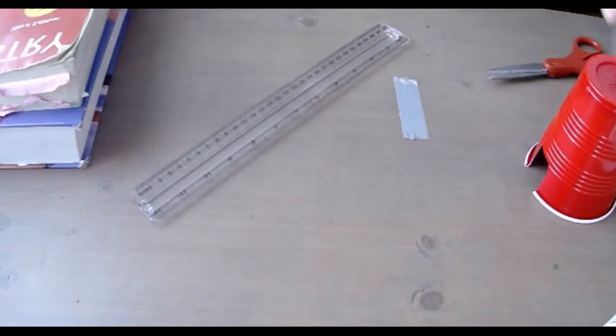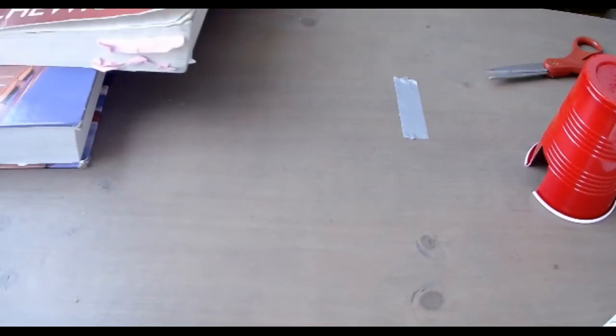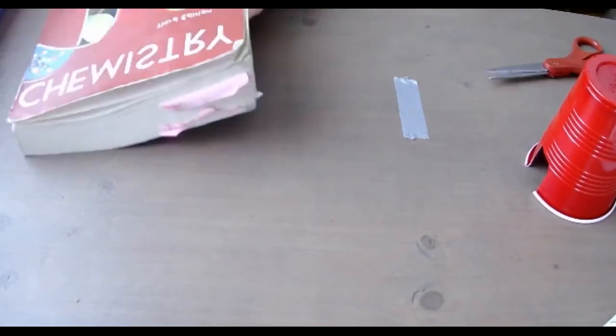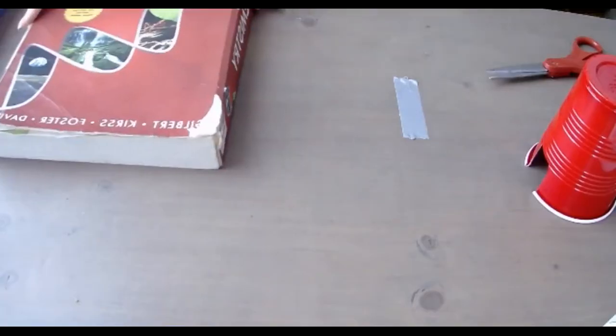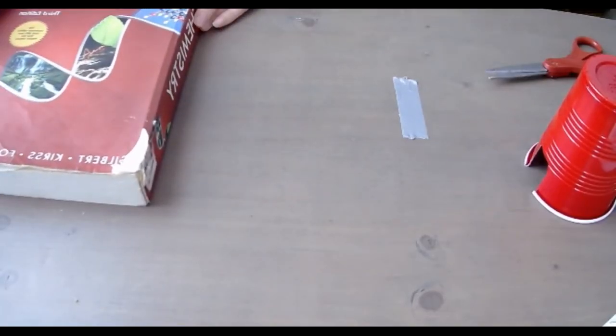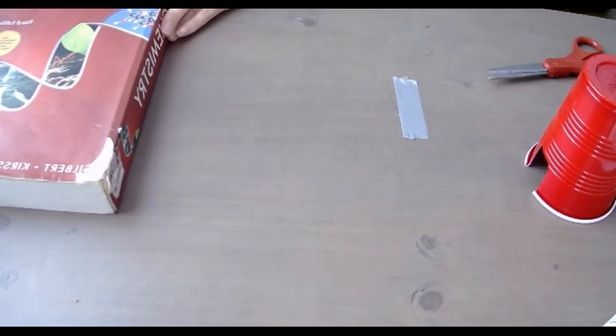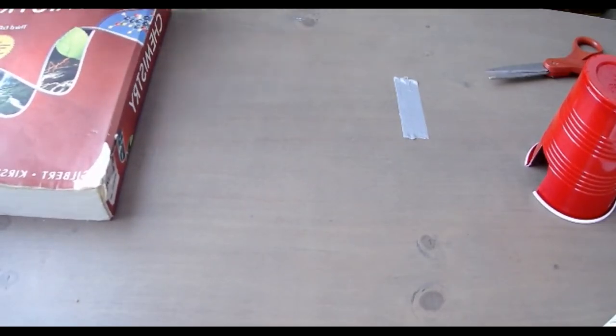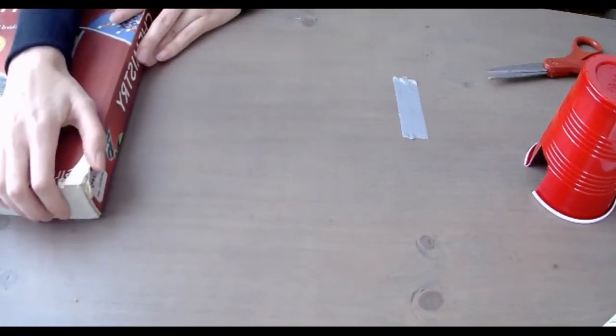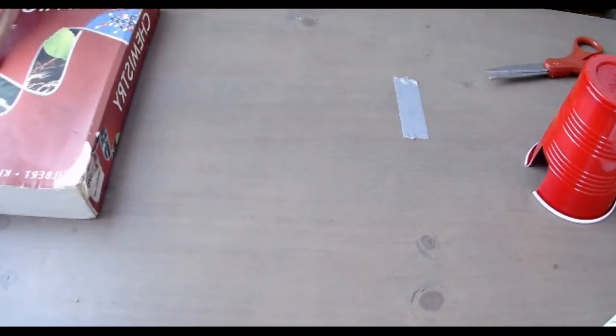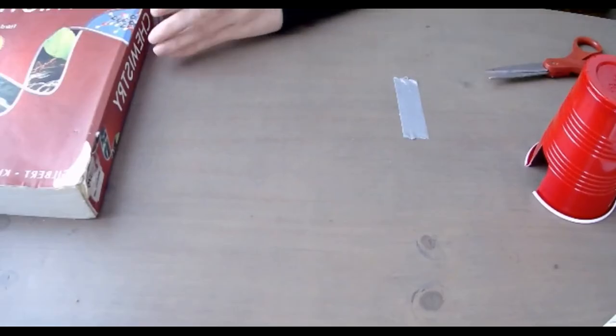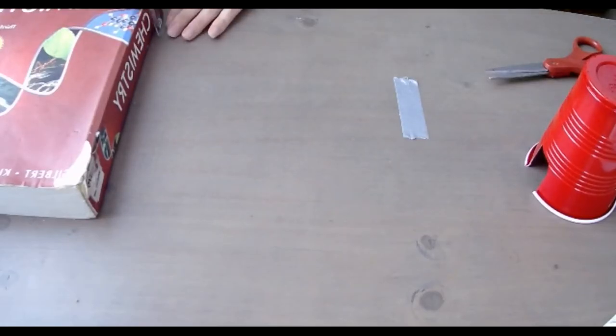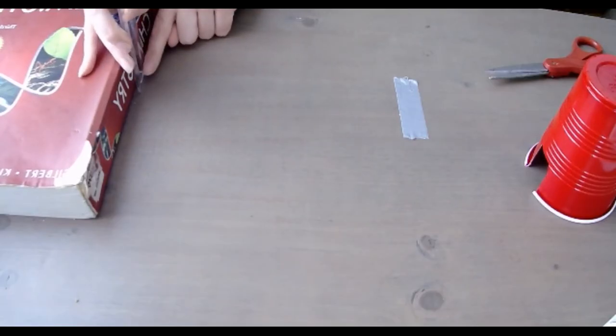Now once that's ready, we'll set up our ramp. You want to have some books - science books like this one are even better. You're going to start with one book, which will be your lowest height. Once you have your book set up with some space for your ramp coming out, measure the height of that book because that will be your first ramp height. Using your ruler, go ahead and measure that first height.